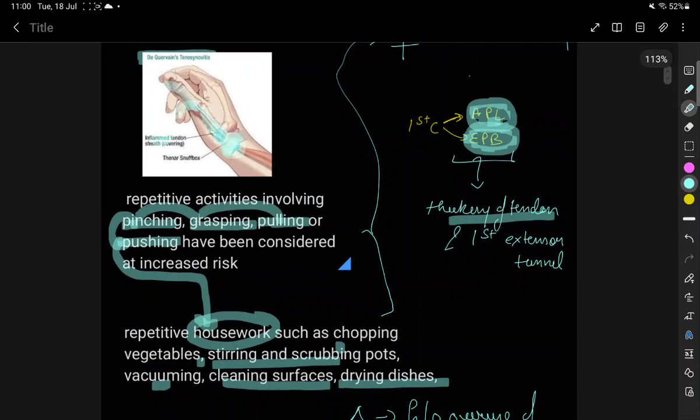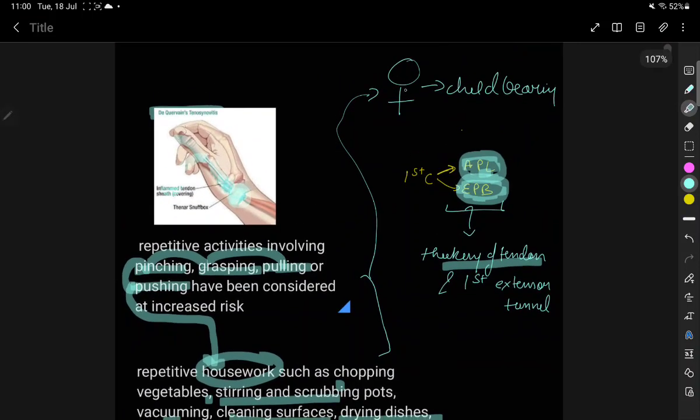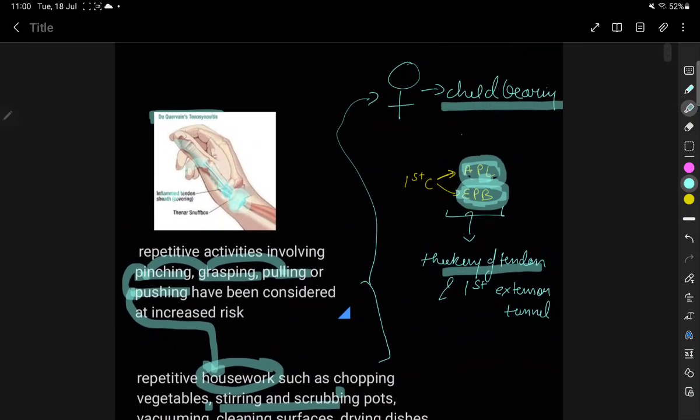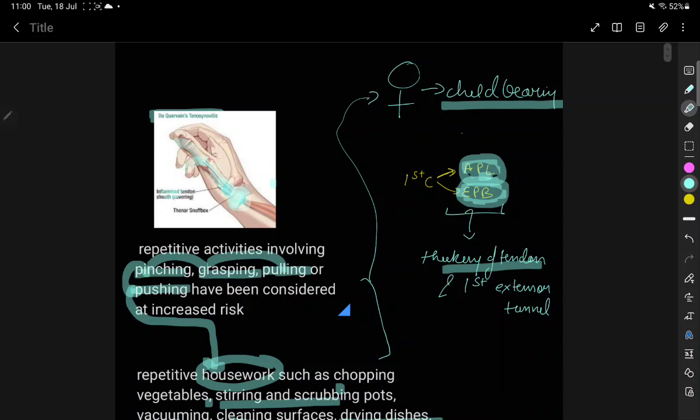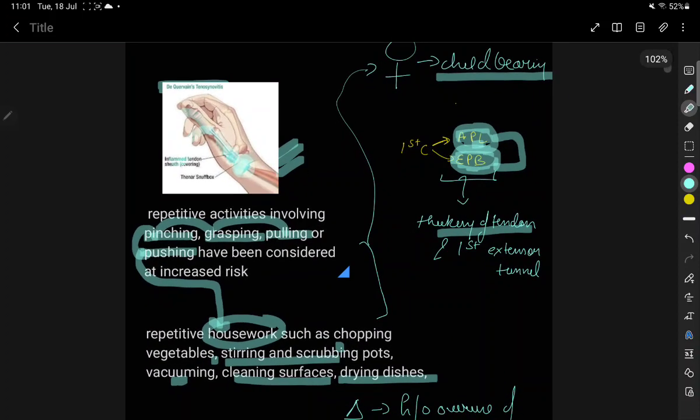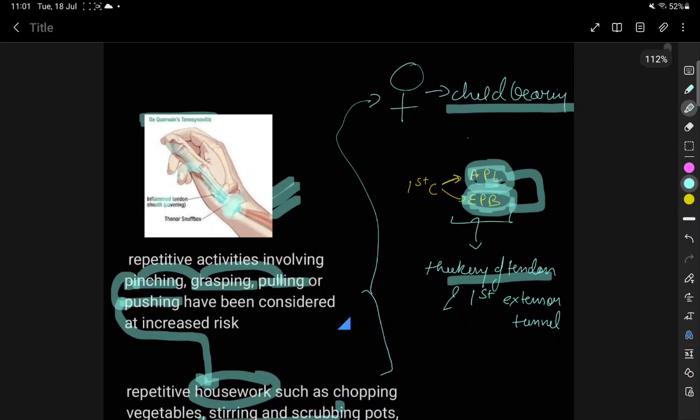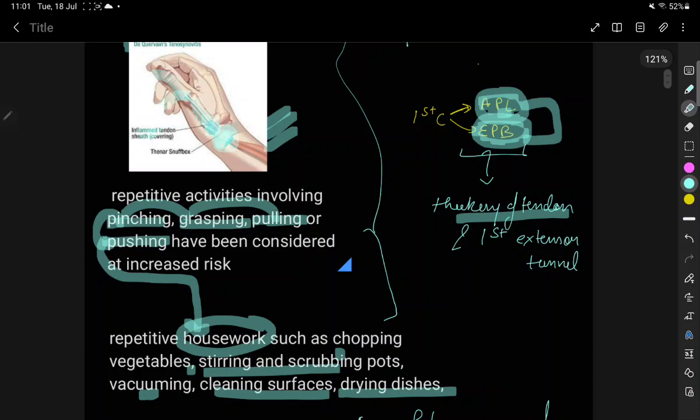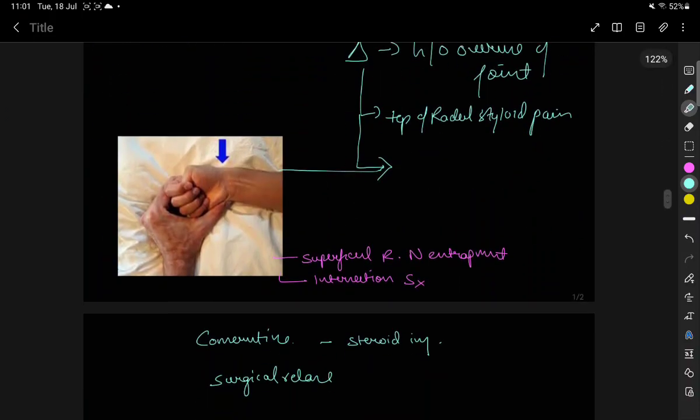Among females who are childbearing age, newly married, cases of de Quervain's tenosynovitis involving the first compartment tendons are commonly seen in females of newly married childbearing age who are involved in household work. A lot of overuse of this joint and these tendons occur in these cases.